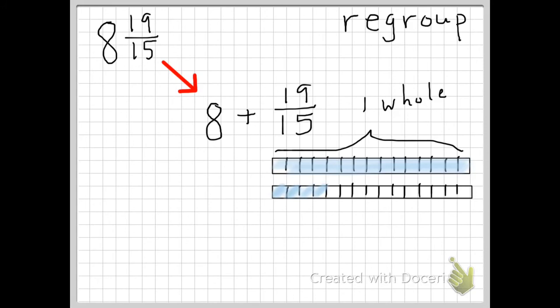So I go on to the next one. 16, 17, 18, 19. Those are the additional parts that are needed to create 19 fifteenths. So consequently I have 1 whole and 4 fifteenths left over.